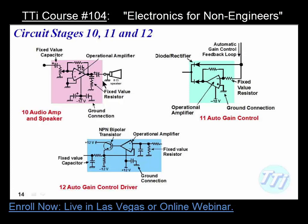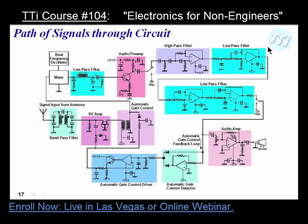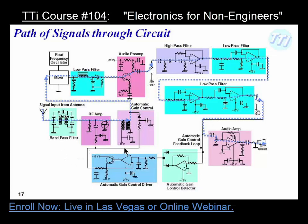This is the block diagram, which you've drawn over. This is the path — the signal comes in, back around, up through here, back around, and out. You're going to sample some of the signal right here at this point. It's going back into the automatic gain control detector. If the signal is really weak, it's going to add to that signal and boost it up so it works better.